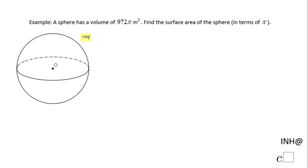Welcome back at I Need Help at C Square. In this example we have a sphere and we know the volume of this sphere is 972π cubic meters, and we need to find the surface area of this sphere in terms of π.